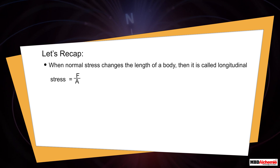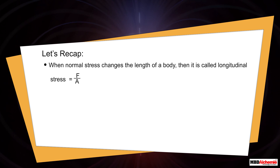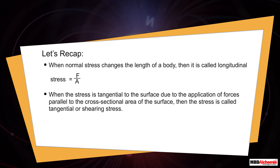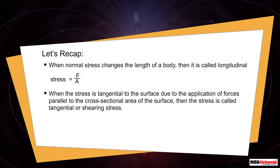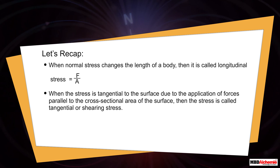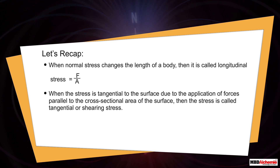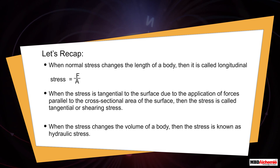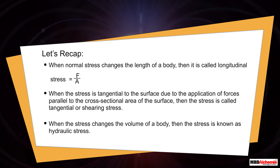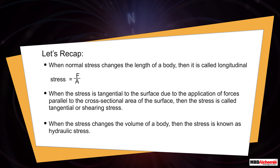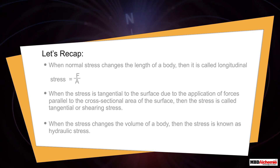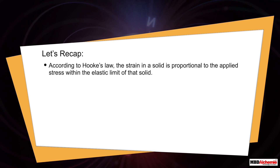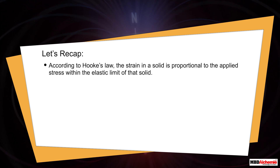When normal stress changes the length of a body, it is called longitudinal stress, equal to F/A. When stress is tangential to the surface due to forces parallel to the cross-sectional area, it is called tangential or shearing stress. When stress changes the volume of a body, it is known as hydraulic stress. According to Hooke's law, the strain in a solid is proportional to the applied stress within the elastic limit of that solid.